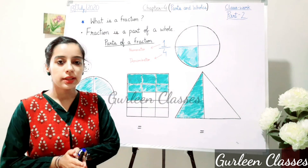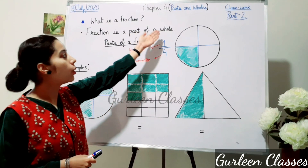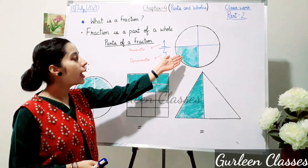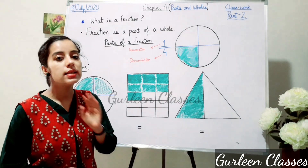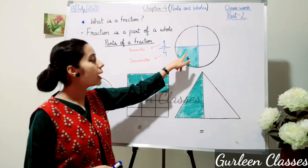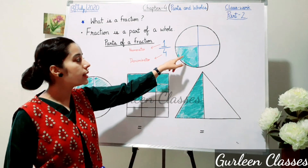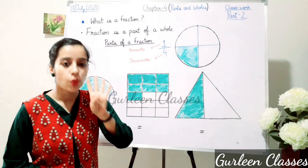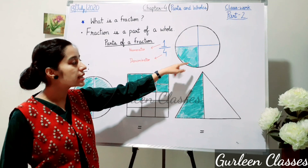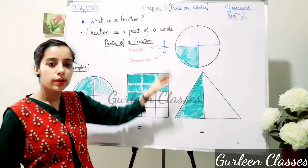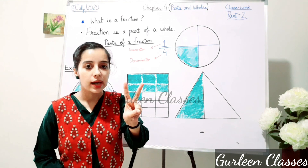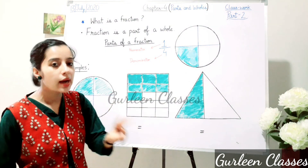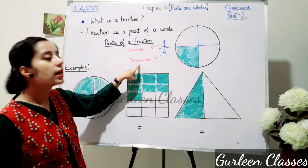Now, what is a fraction? A fraction is a part of a whole. Here I have drawn one circle and this circle is divided into 4 equal parts. Out of this, one part is shaded. So you can imagine this as a pizza. This pizza has 4 slices and out of those 4 slices, one slice has been taken out. So a fraction has 2 parts: the first part written at the top is known as the numerator, and the second part written at the bottom is known as the denominator.